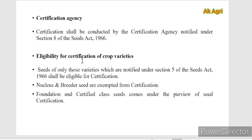Regarding eligibility for certification of a crop variety — not all varieties will get certification. Only the seeds of those varieties which are notified under Section 5 of the Seed Act 1966 are eligible for seed certification. Section 5 deals with the notification of variety. Nucleus seed and breeder seed are exempted from seed certification. Only foundation seed and certified seed are the two classes that come under seed certification.